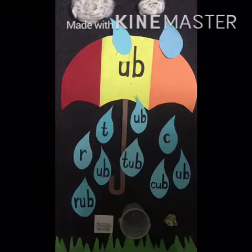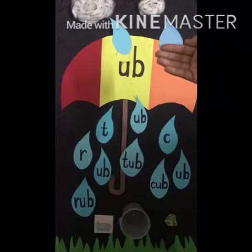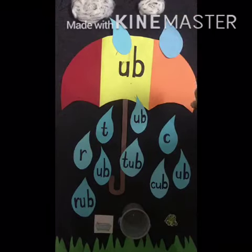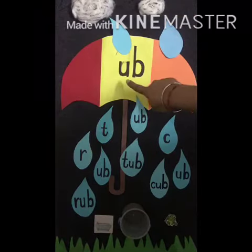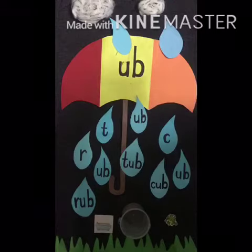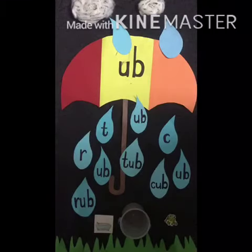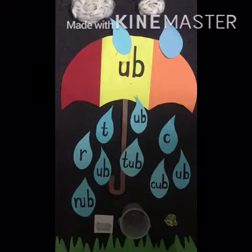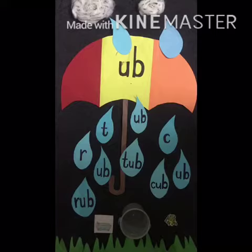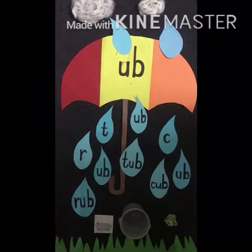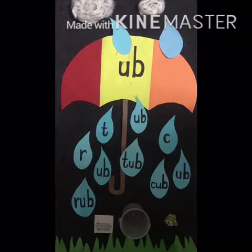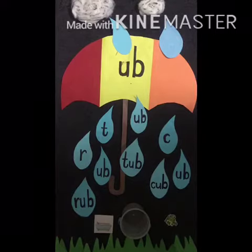See? Something is written on the umbrella. What's this? Let's read. Up, b, up. It's a word family — the 'up' family. And this is the word family that we have to do today. Which family? Up family.